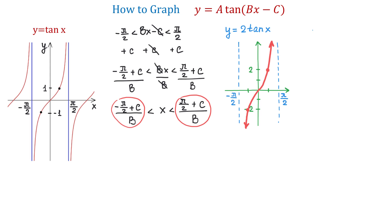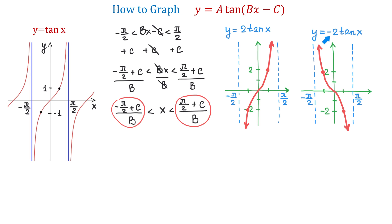But what about the graph of the function y equals negative 2 tangent of x? Because in front of tangent we have negative 2, if from the x-intercept we move halfway to the right the value of the function is negative 2, and when we move halfway to the left the value is positive 2. So whatever number we have in front, that will be the value of the function when we move halfway to the right. If we compare these two graphs, we may recall from algebra that if in front of a function we put a negative, then the graph will be reflected about the x-axis.